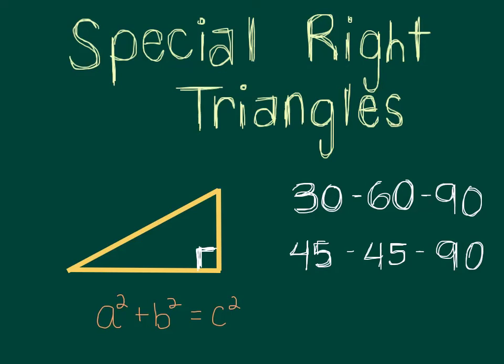This video is going to serve as a quick review of special right triangles. The two types of special right triangles are 30-60-90 and 45-45-90. These numbers refer to the angles of the triangle. Another thing we're going to need to use during this video is the Pythagorean theorem: a² + b² = c².